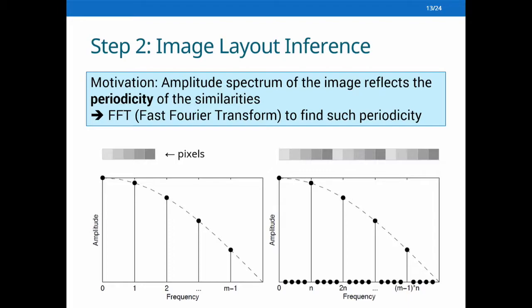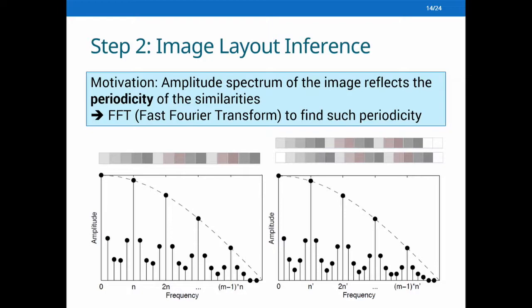Fourier transform can decompose a signal from the time domain into the frequency domain. In the first example, there is one period; in the second example, there are n periods. Knowing the total length and the number of periods, we can calculate the period length easily — that is, the image width. Even for more complex cases, the periodicity feature can still be observed. Even for the toughest case of block padding, through another round of FFT we can also obtain the period length.